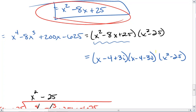But wait. x squared minus 25 is difference of squares. So we get x minus 4 plus 3i times x minus 4 minus 3i times x plus 5 times x minus 5.